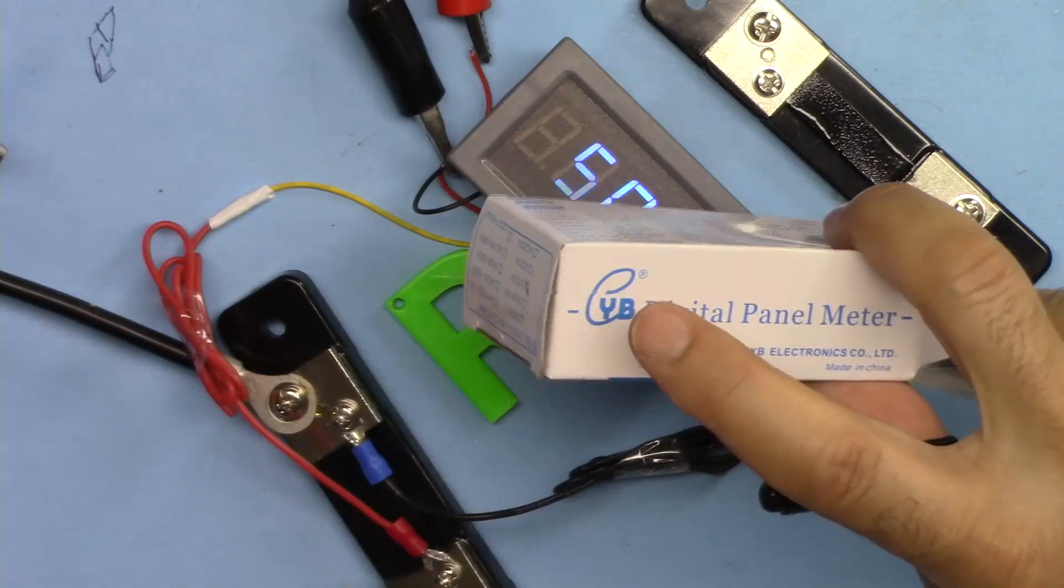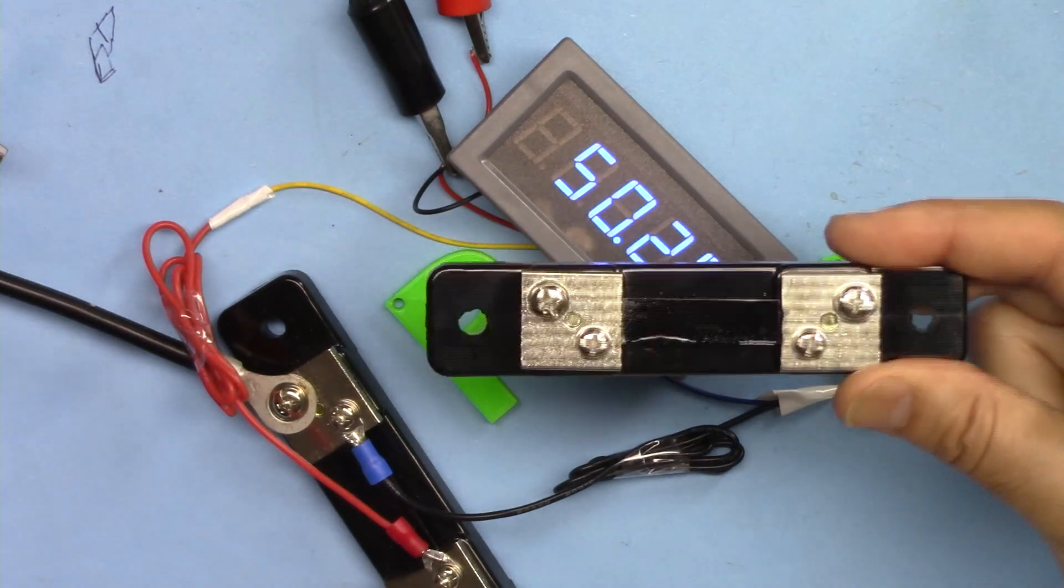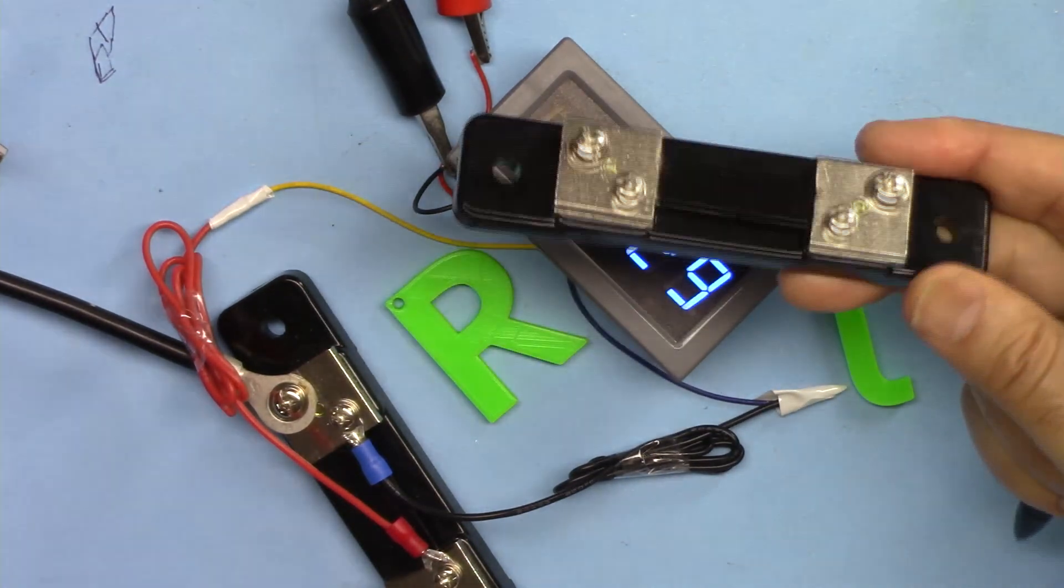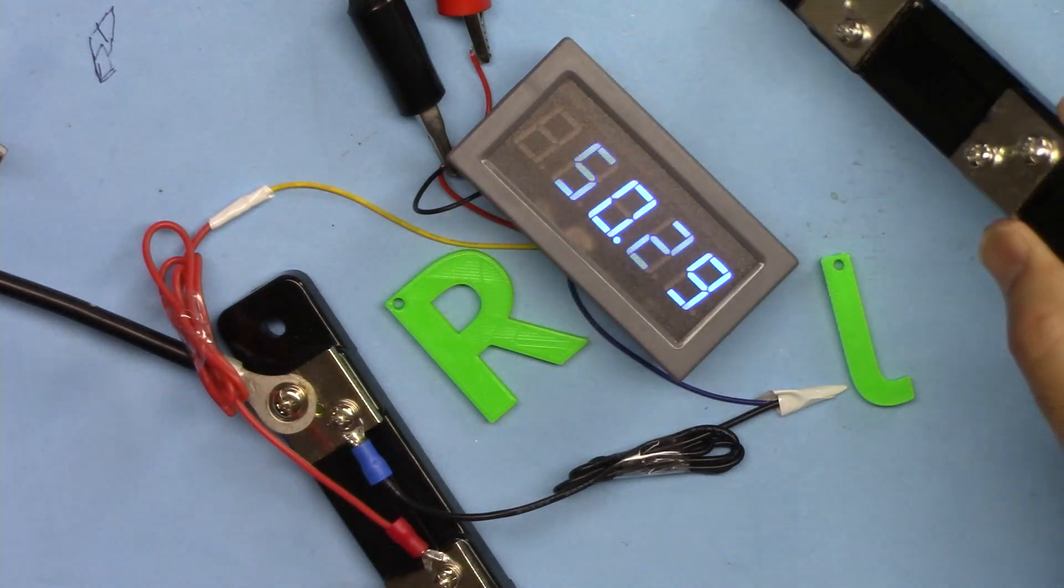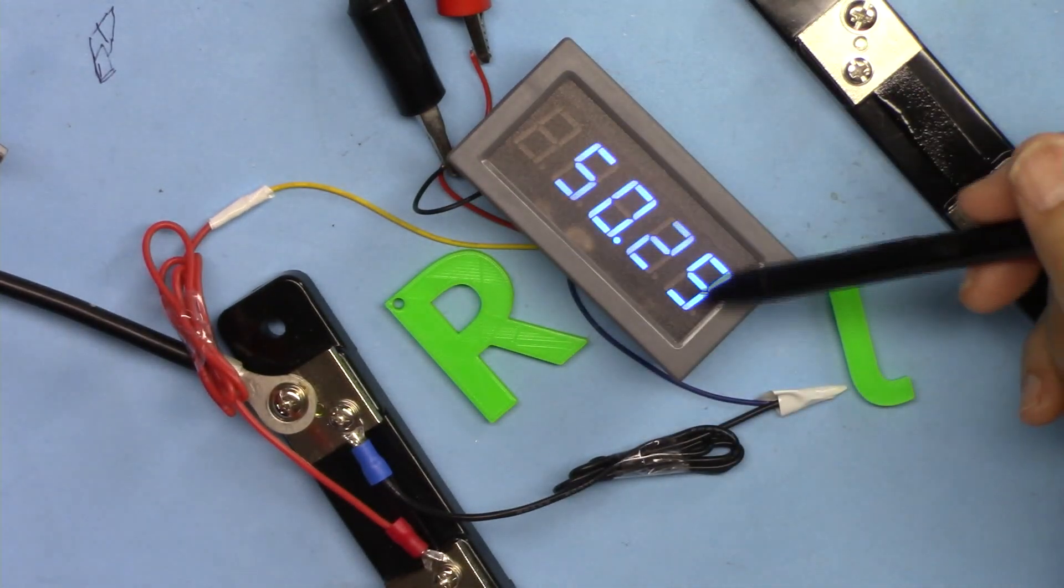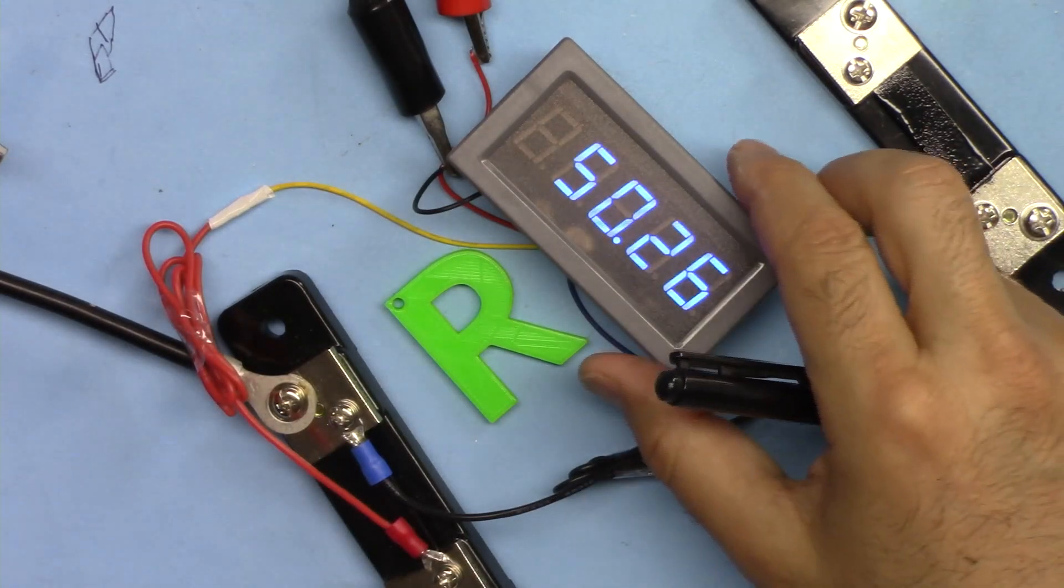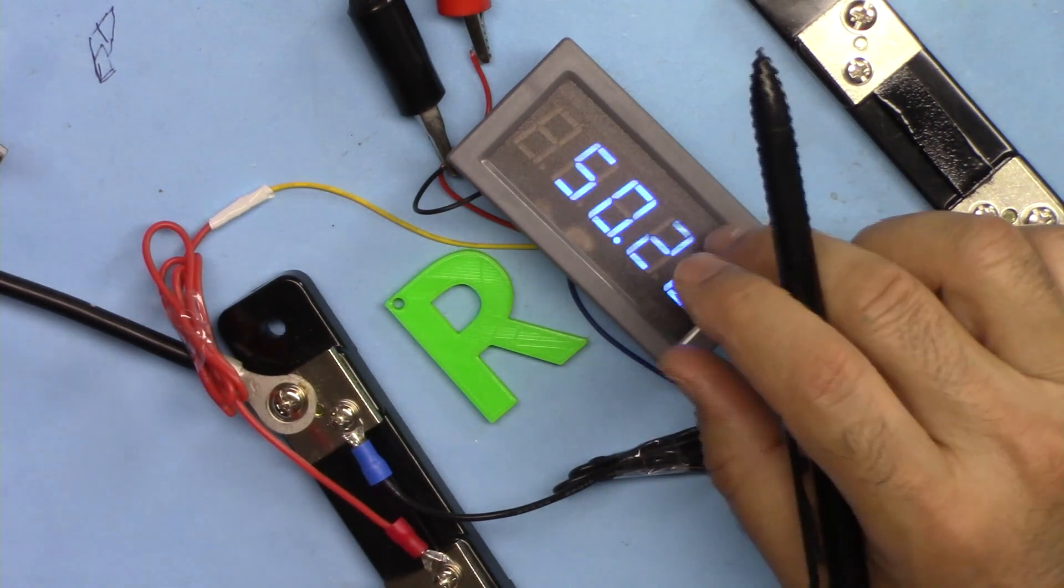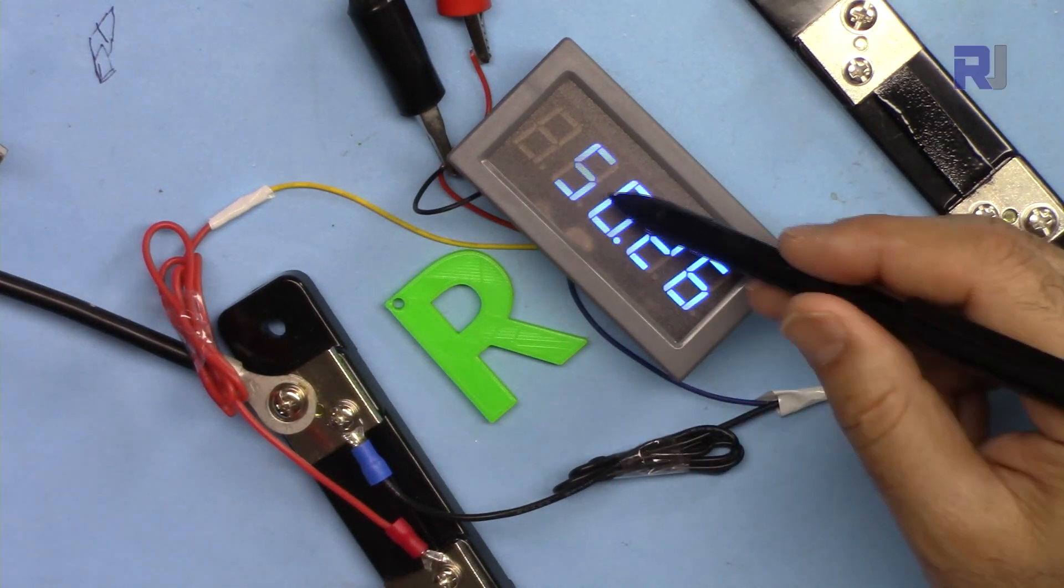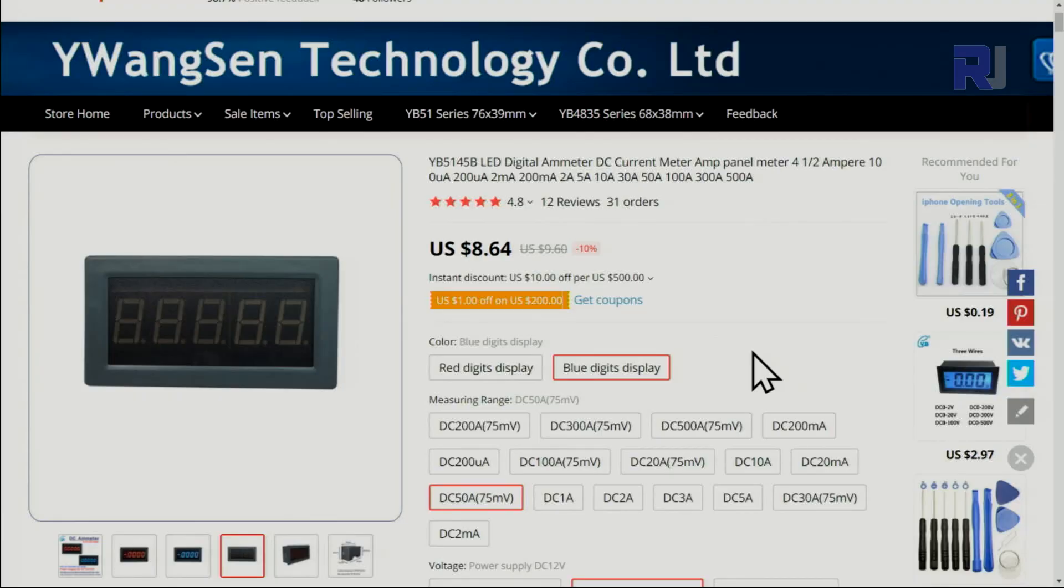This is a YB digital ammeter that can measure the current using a 50 ampere shunt resistor that is widely available. This is a 75 millivolts 50 ampere shunt resistor and it has five digits that can measure up to 50 ampere. It's 0.63 inch or 16 millimeter large LED display available in red and blue.